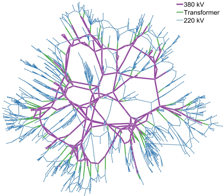A microgrid is a localized group of electricity sources and loads that normally operates connected to and synchronous with the traditional wide-area synchronous grid, but can also disconnect to "island mode" and function autonomously as physical or economic conditions dictate. In this way, a microgrid can effectively integrate various sources of distributed generation, especially renewable energy sources, and can supply emergency power, changing between island and connected modes. Control and protection are challenges to microgrids.